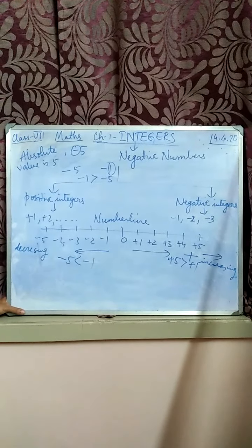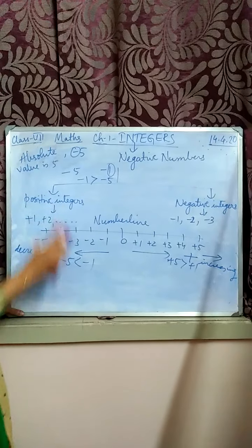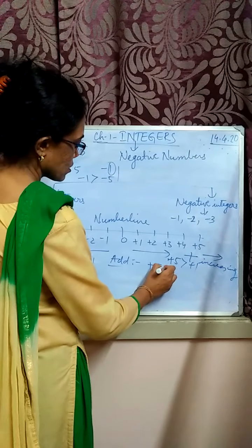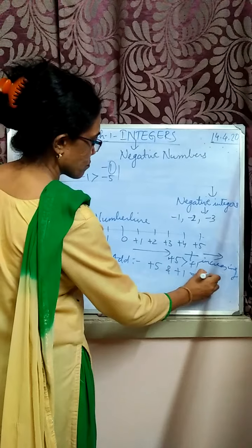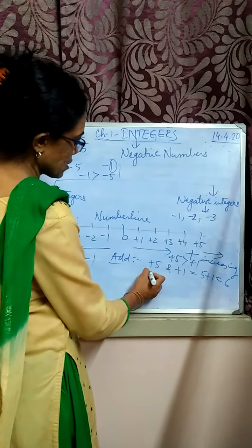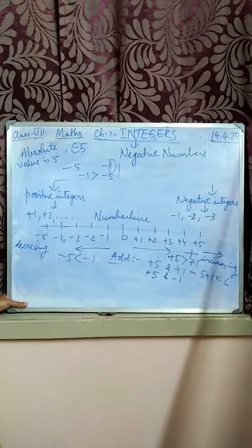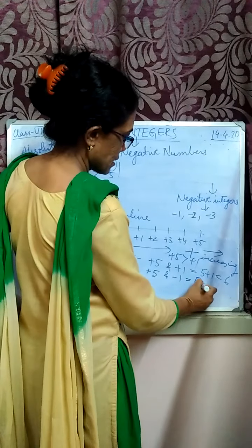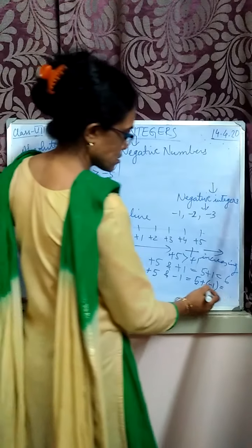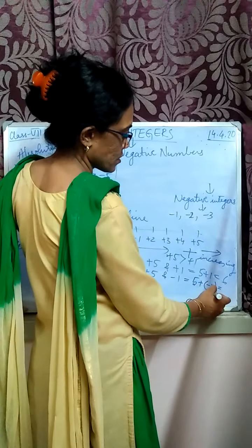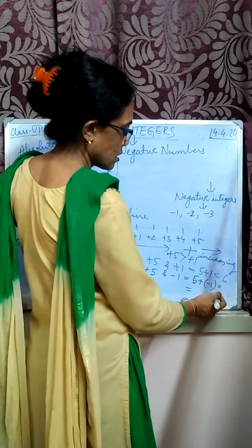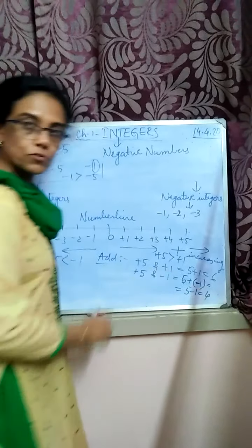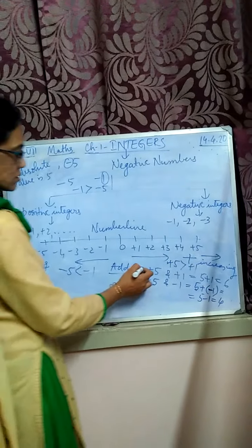Next we come to addition of integers. How will you add two integers? Suppose you are adding two positive integers — plus 5 and plus 1. You know that 5 plus 1 is 6. You are adding a positive integer with a negative integer — plus 5 added with minus 1. That means you are subtracting 1 from it. Minus means you are subtracting 1 from 5, so 5 minus 1 is 4. Because of the minus sign, you are subtracting 1 from 5.